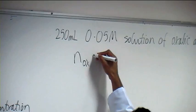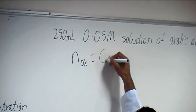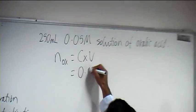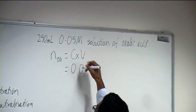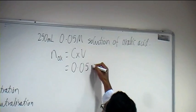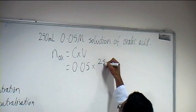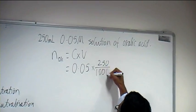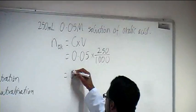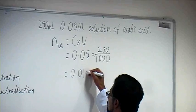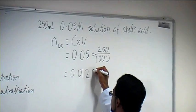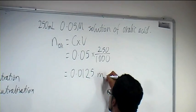Moles of oxalic acid equals concentration times volume. Concentration is 0.05, volume is 250 mL, giving us 0.0125 moles.